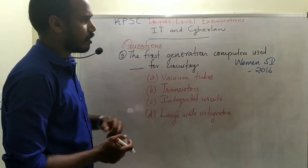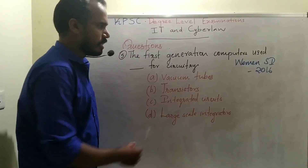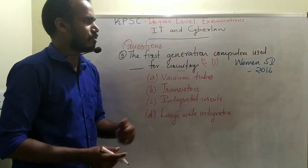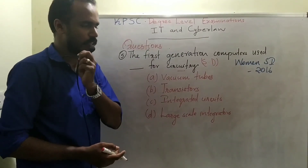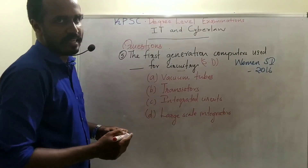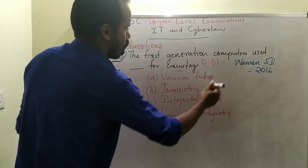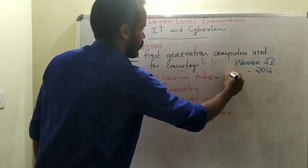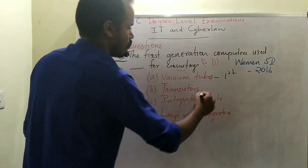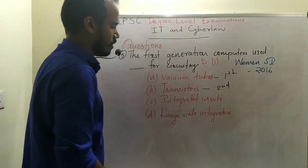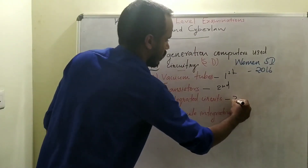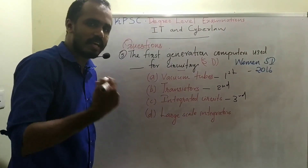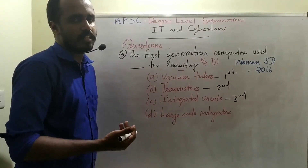The first generation computers used vacuum tubes for circuitry and switching devices. Second generation used transistors. Third generation used integrated circuits. Fourth generation used Very Large Scale Integration (VLSI). Fifth generation uses Ultra Large Scale Integration (ULSI). That concludes the topic of computer generation.